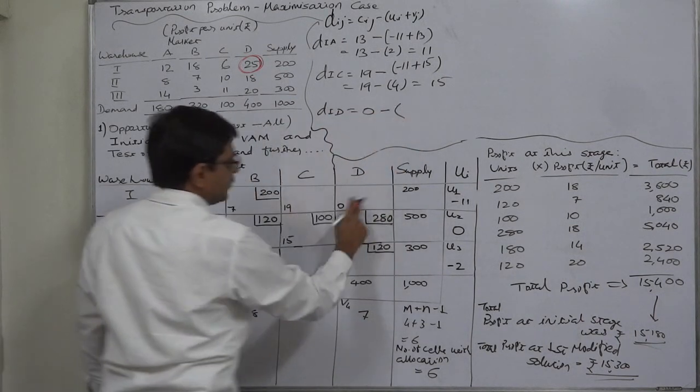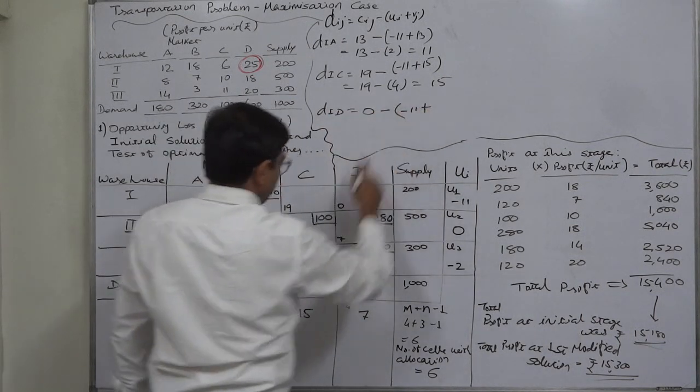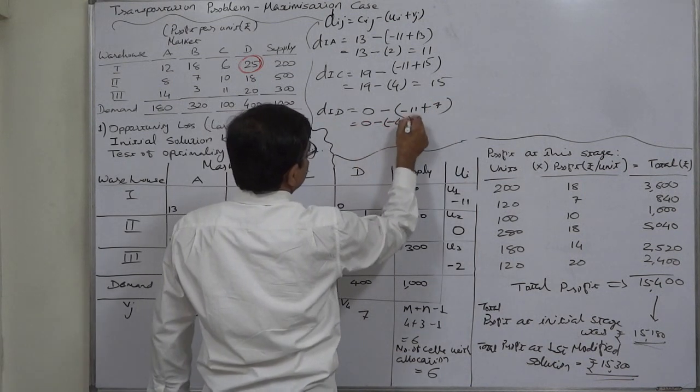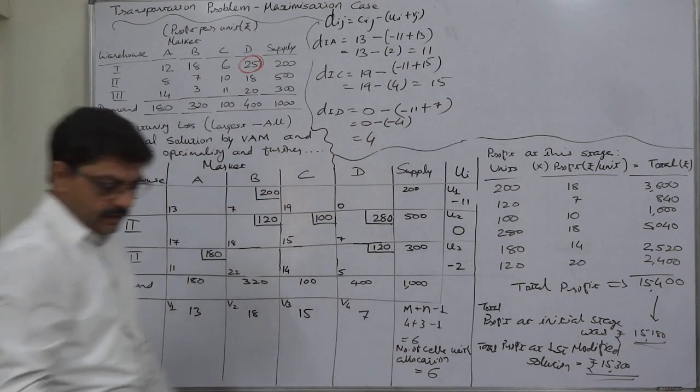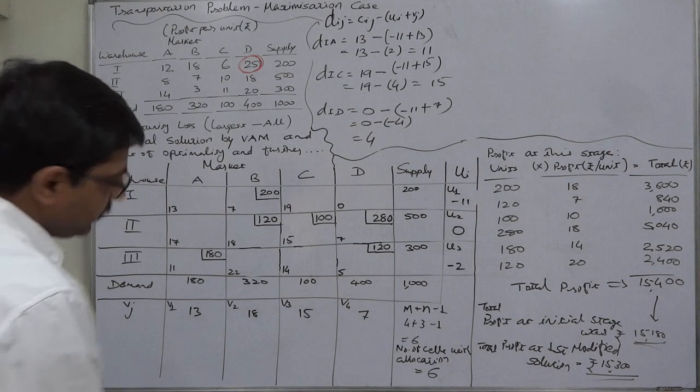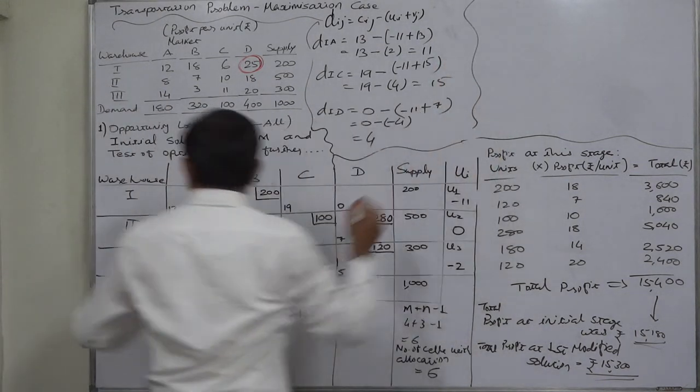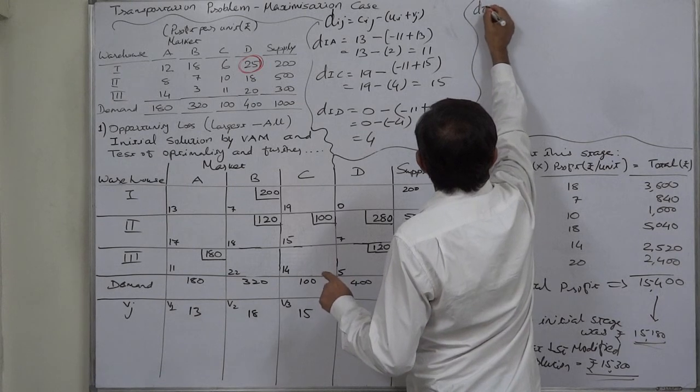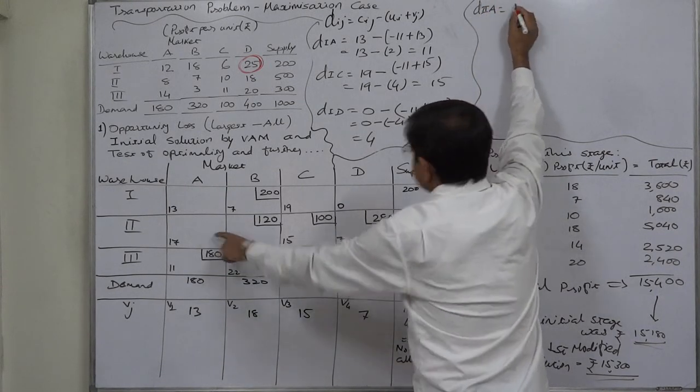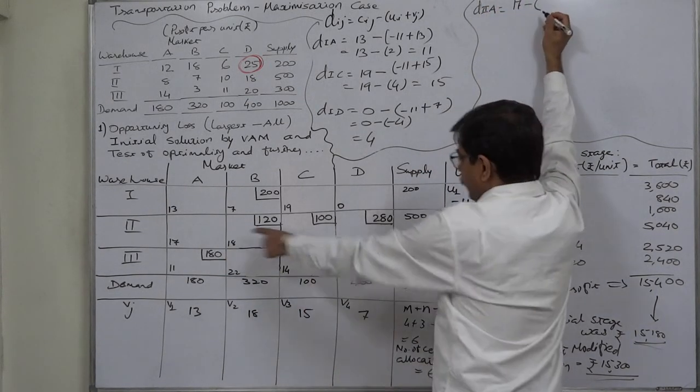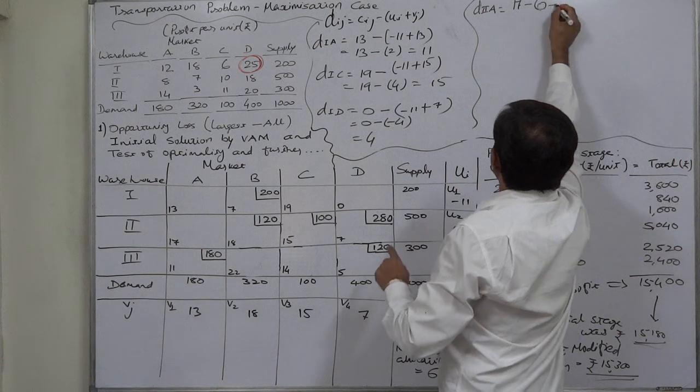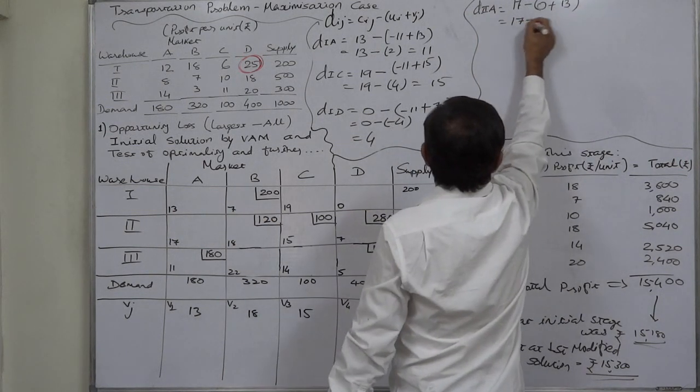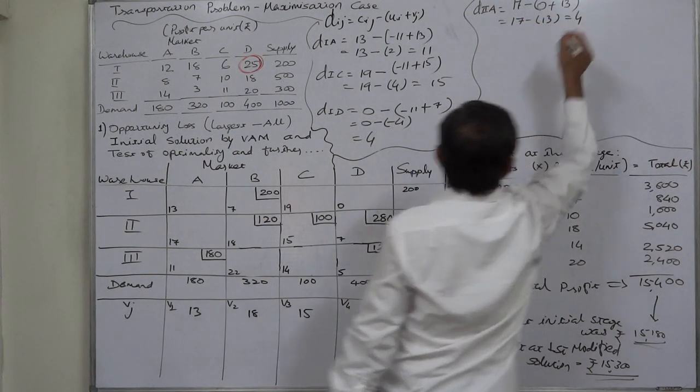D1d: 0 minus minus 11 plus relevant v is 7, so it is positive 4. Now second row empty cell d2a: c is 17 minus relevant u which is 0 plus relevant v is 13, so it is 17 minus 13 equals positive 4.